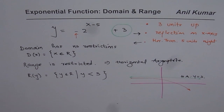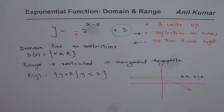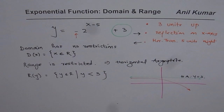To summarize: to write the domain and range of an exponential function, the domain has no restrictions, so any horizontal stretch, compression, or translation will not affect the domain. For the range, we consider the vertical transformations, since they define the horizontal asymptote and the reflection. If there is a reflection on the x-axis, the range is below the horizontal asymptote; if not, the range is above it. I hope that helps. Thank you and all the best.